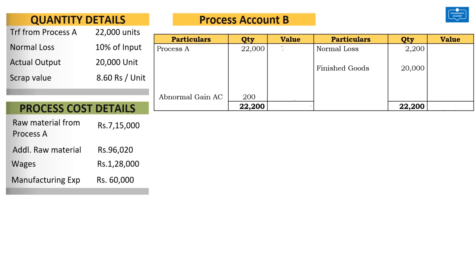Now that we have tallied the quantitative particulars, let us quickly fill in all the cost particulars: cost of goods transferred from Process A is Rs. 7,15,000, additional raw material is Rs. 96,020, wages paid Rs. 1,28,000, and overheads Rs. 60,000. The revenue for this process: 2,200 units are the normal loss, and this can be sold at a scrap value of Rs. 8.60 per unit. When you do that, you have a revenue of Rs. 18,920. This has to be entered against normal loss on the credit side of the Process B account.